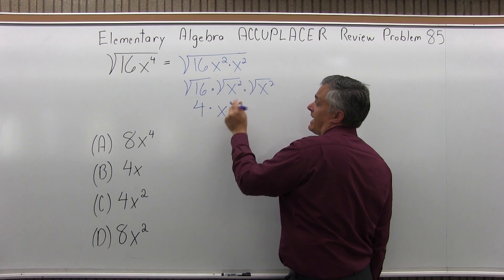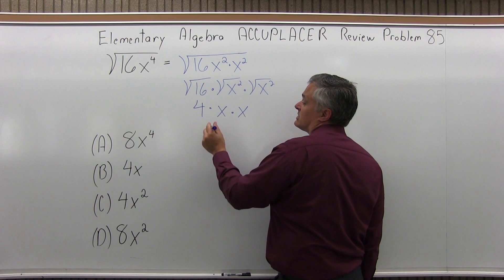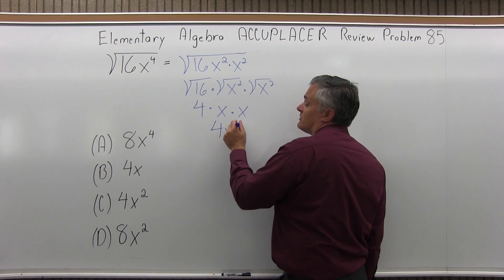And then the same thing happens again. The square root of x squared is just x. And I have 4 times x times x, which I can simplify as 4x squared.